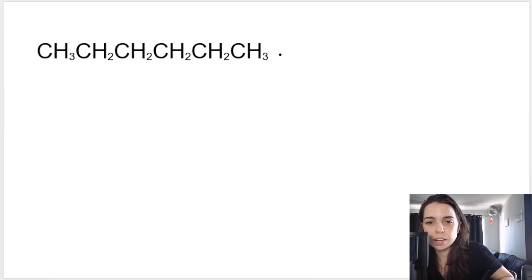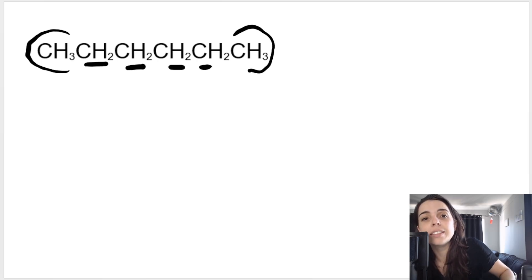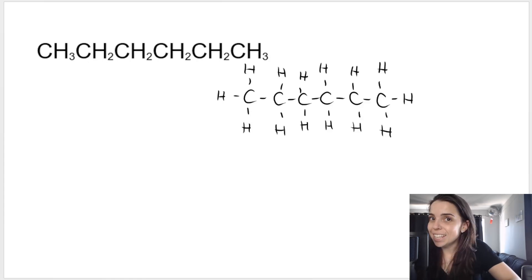You can always draw it out to check. However, you will become accustomed to knowing that if there's a CH3 on the end, a CH3 on the end, and the C's in the middle are bonded to two hydrogens, then it is an alkane.